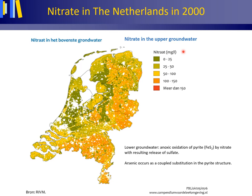The sulfur in pyrite oxidizes to sulfate. This oxidation is not by oxygen — which is not present deeper down in the subsurface — but by the nitrate in the groundwater. This so-called anoxic oxidation of pyrite by nitrate results in the release of sulfate. In this way, nitrate and sulfate in the groundwater effectively cancel each other out.